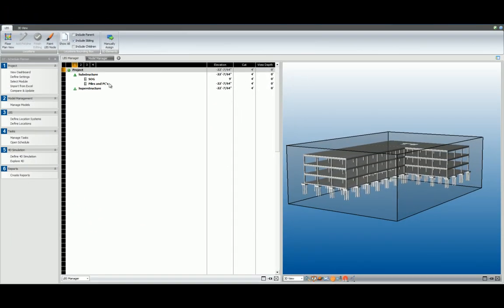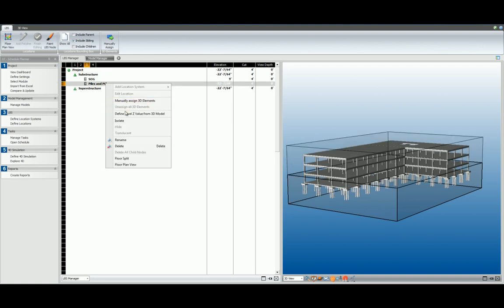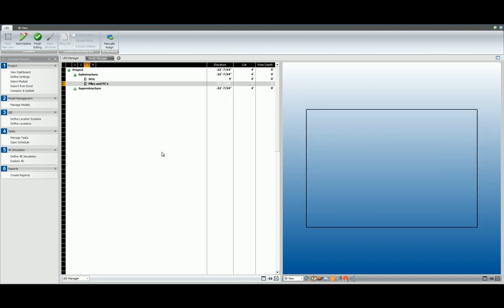Let's check out piles and pier caps locations in the floor plan view. As you can see, with the 4 foot cut, we're not even close to the bottom of the piles.